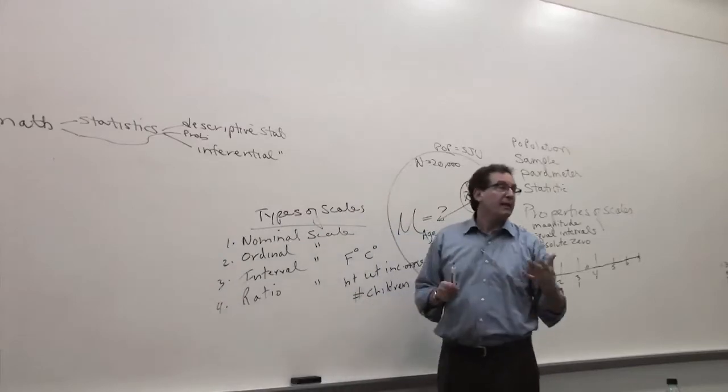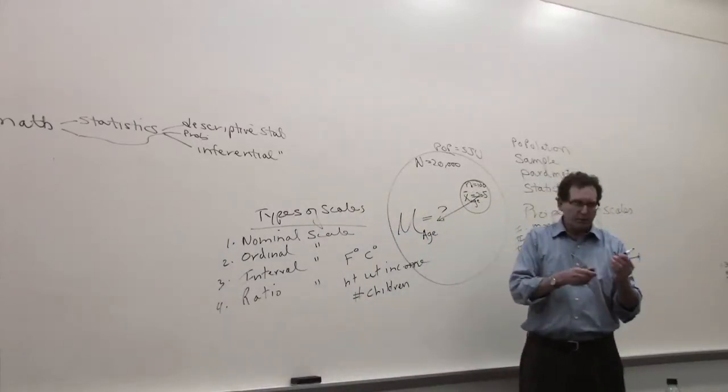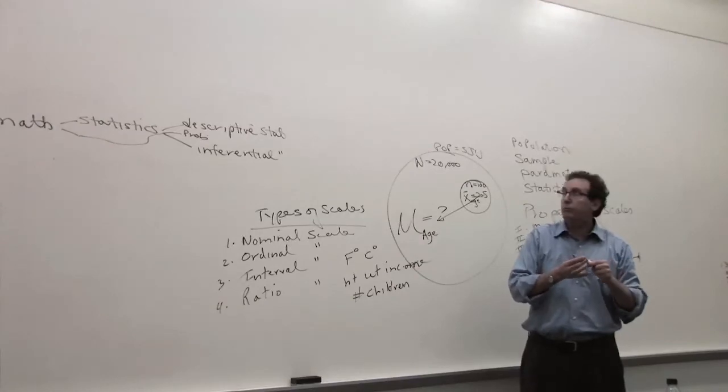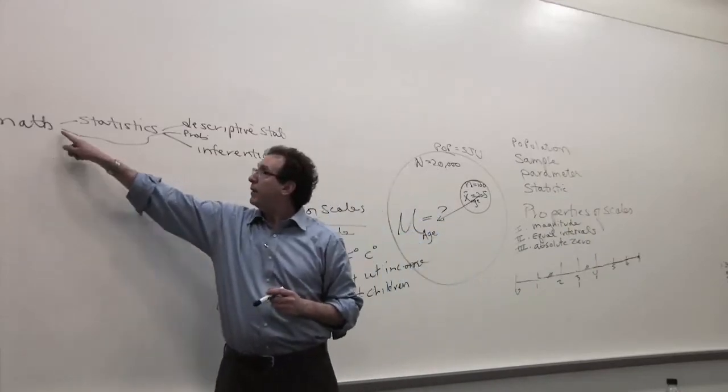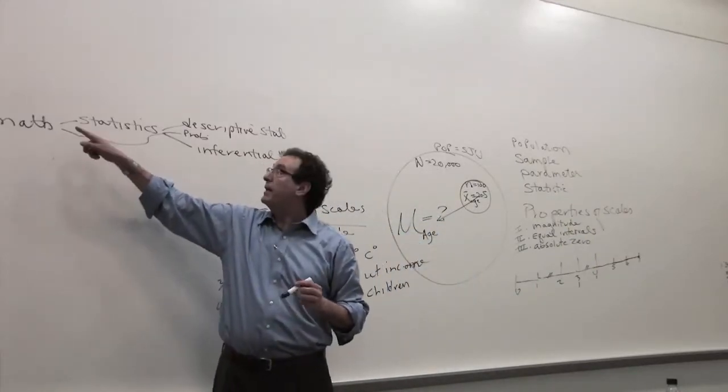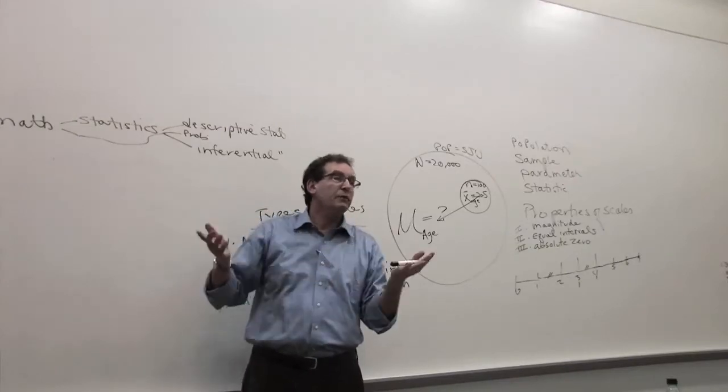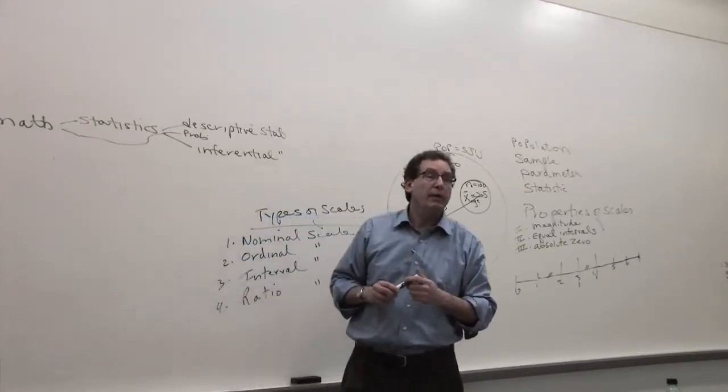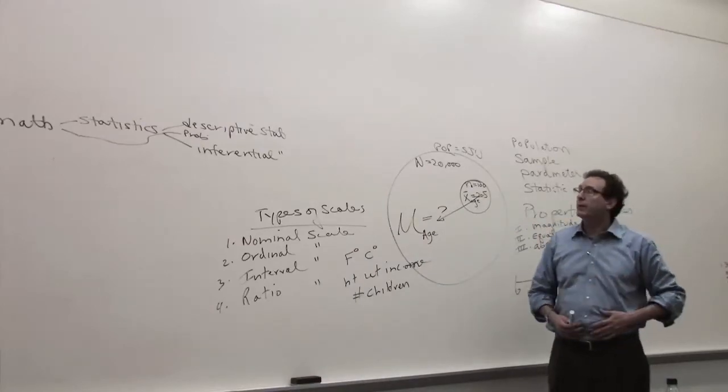But we use probability a lot—like the curve, binomial distribution, a lot of stuff in statistics based on probability. I'm saying math has many examples: statistics, calculus, geometry, trigonometry—all that stuff is branches of math. Statistics is just one branch of math. It happens to be a practical or applied branch of math, but it's still a branch of math.